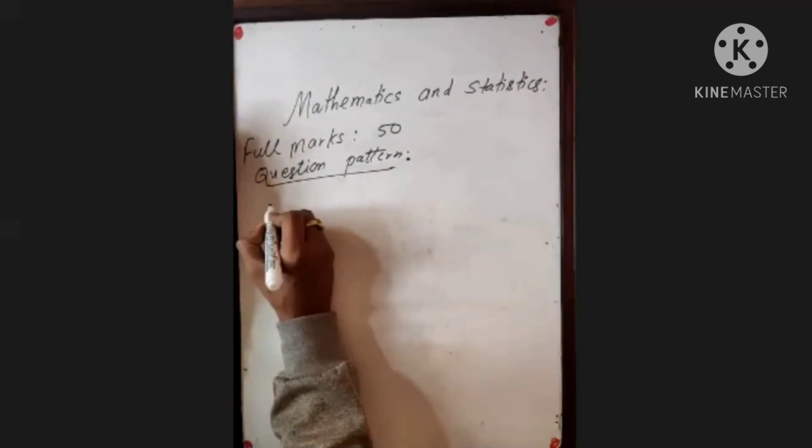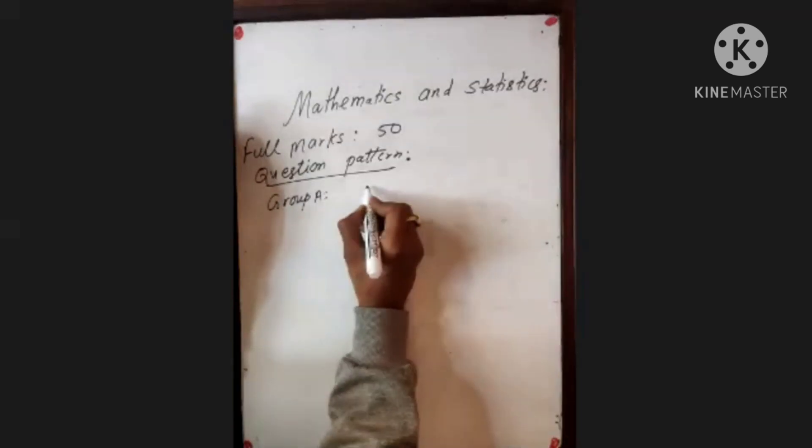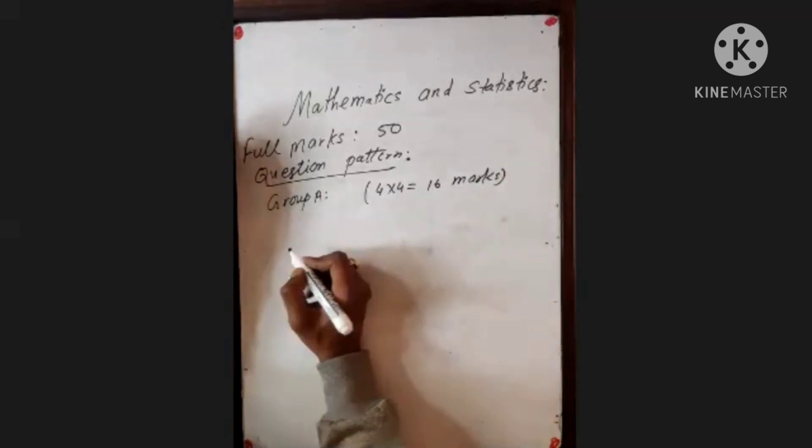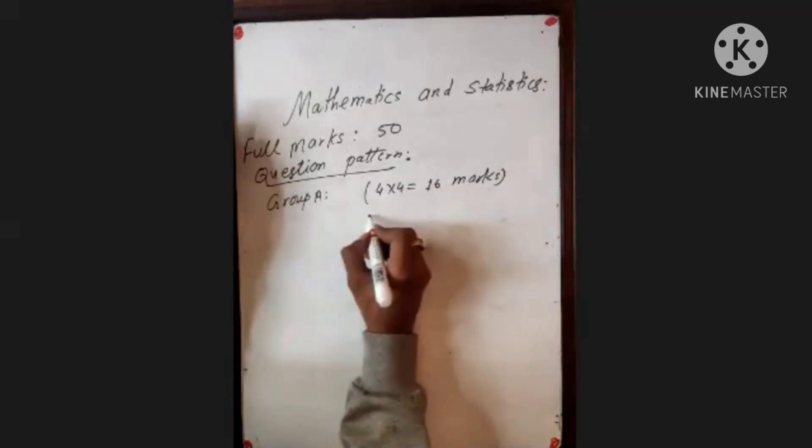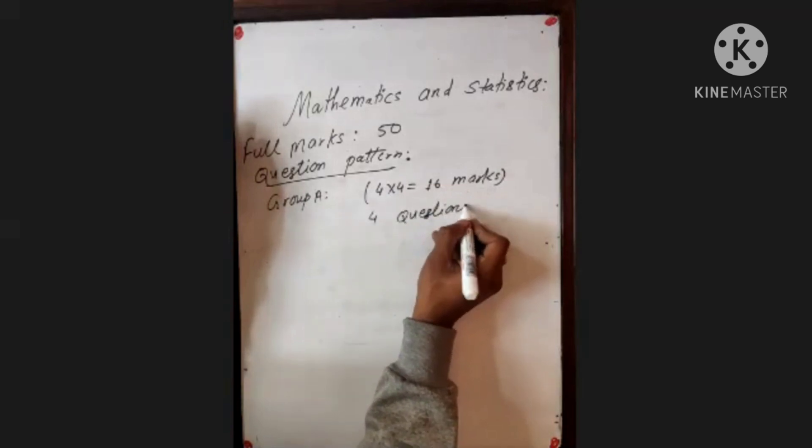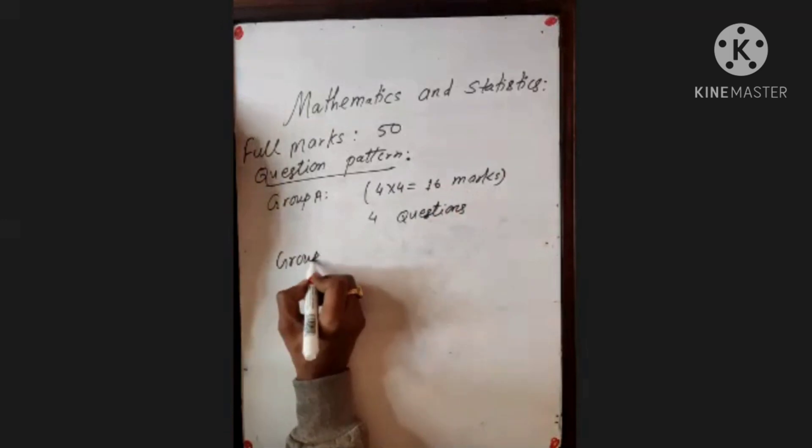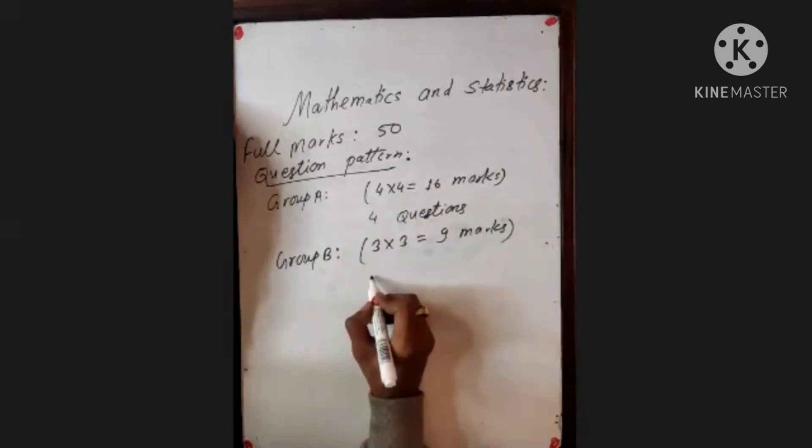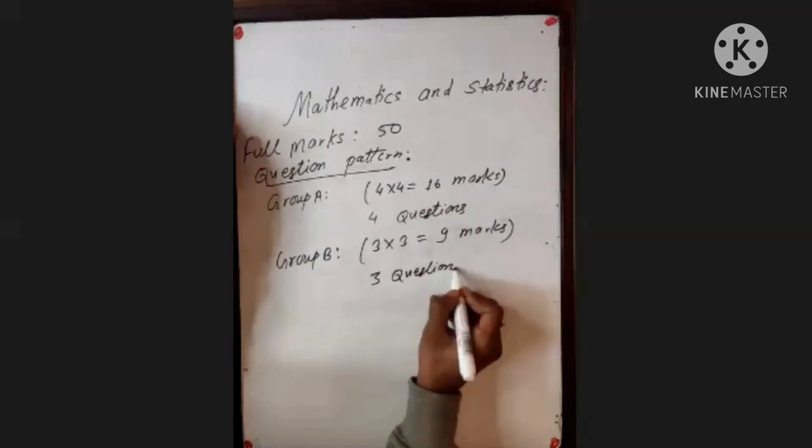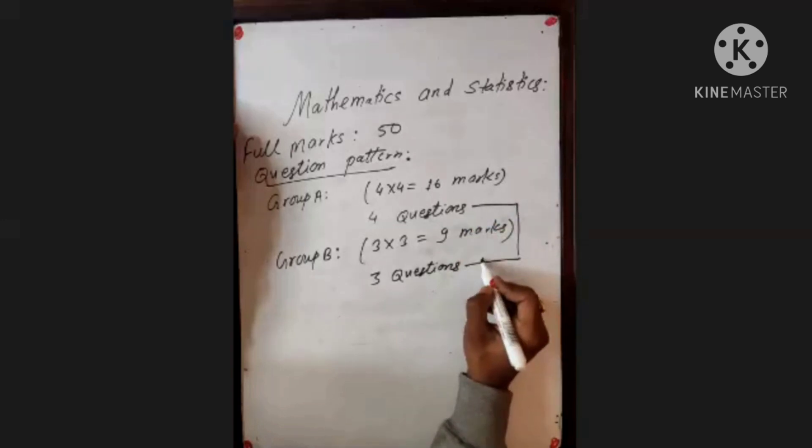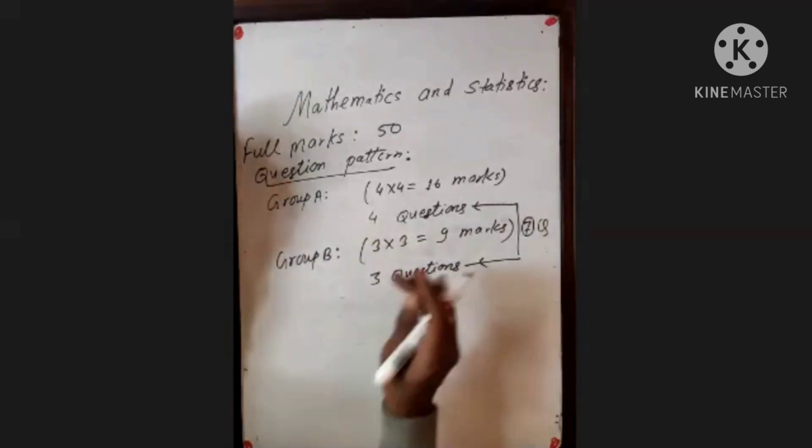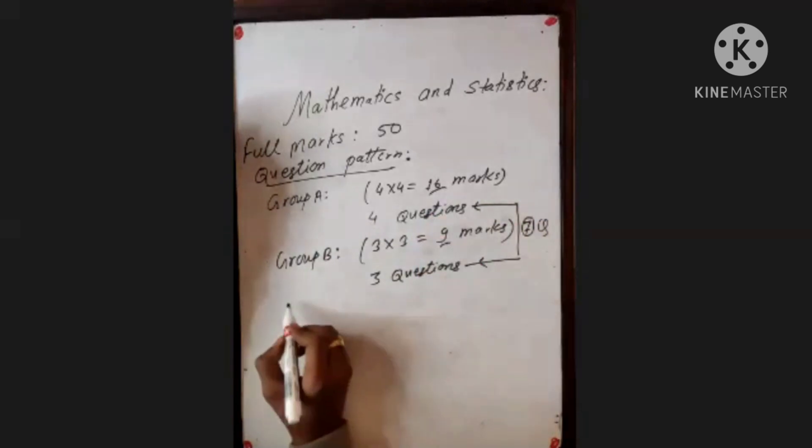Group A: 4 into 4 equals to 16 marks, four questions each of four marks. Group B: 3 into 3 equals to total 9 marks, three questions. Total for Group A and Group B is 16 plus 9 equals 25 marks.